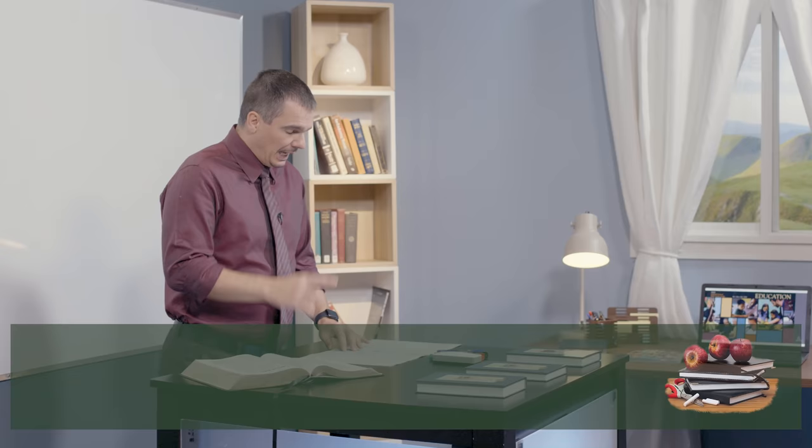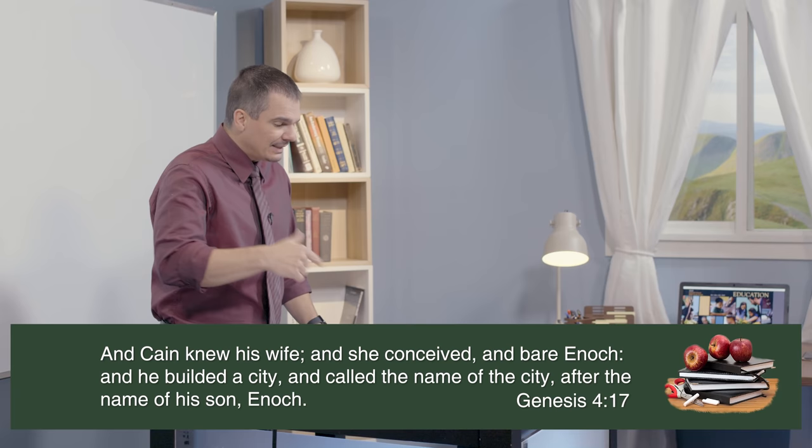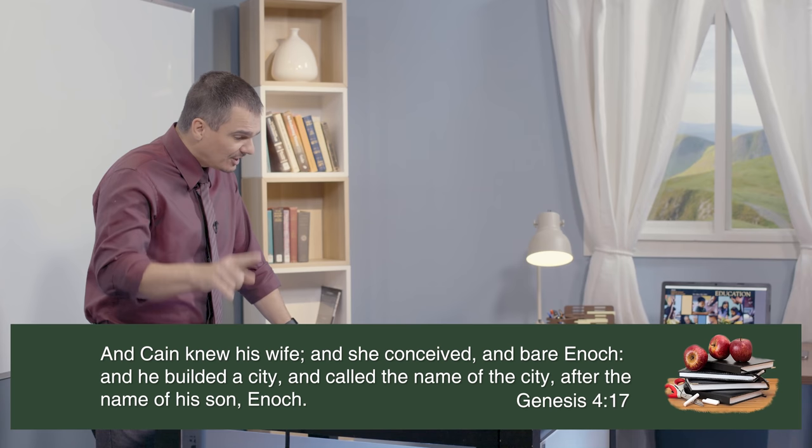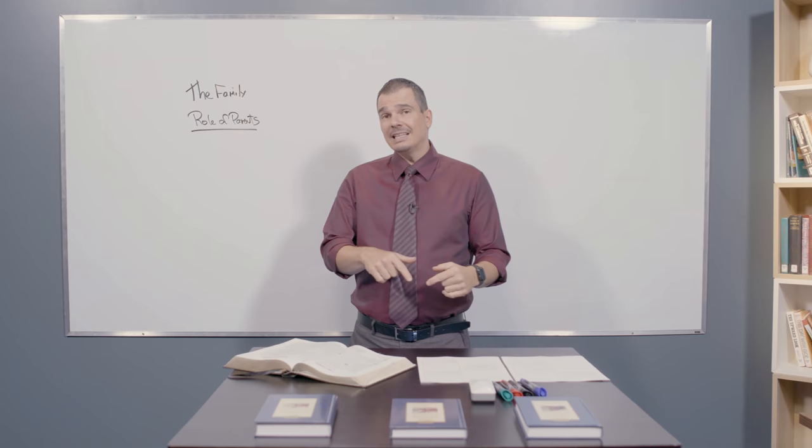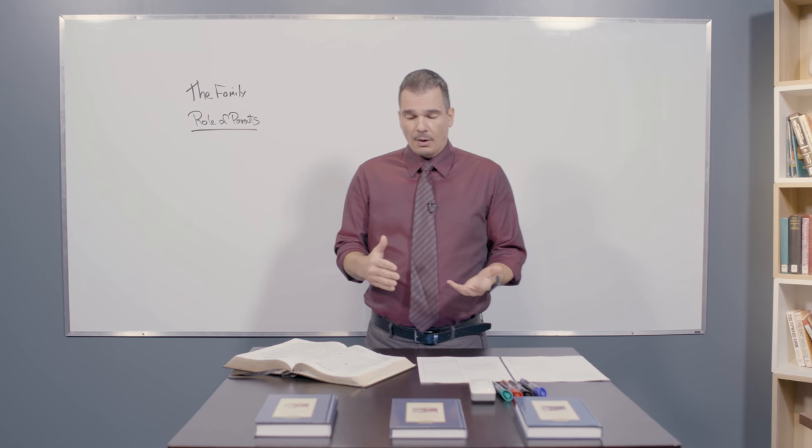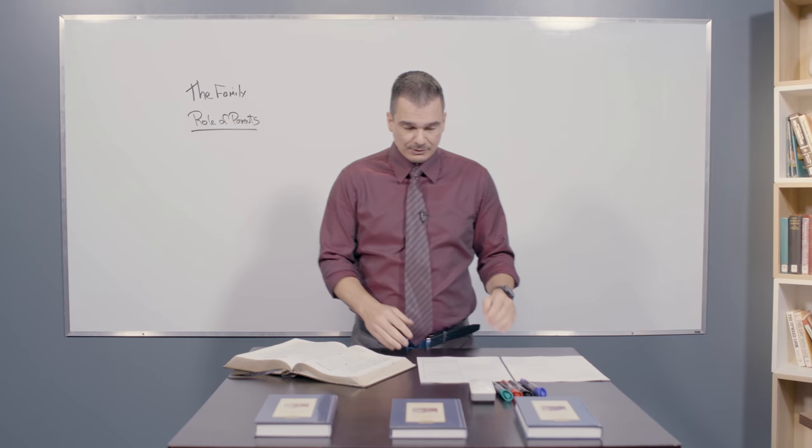In Genesis 4.17, we also read, Again, here we have Enoch practicing a skill of building, which is quite possible that he would have learned that from his father, Adam. The point is, is that a lot of the children's foundational wisdom and knowledge and moral compass and character development depends greatly upon what the parents teach, about what the parent imparts, what the parent display.